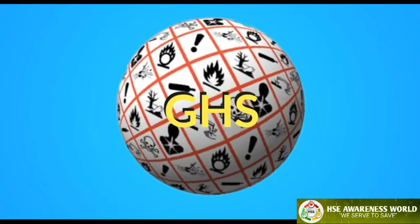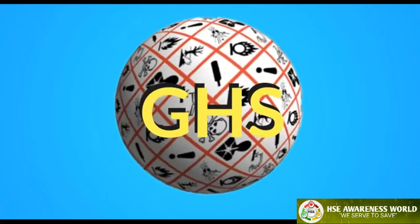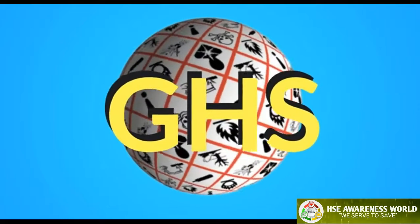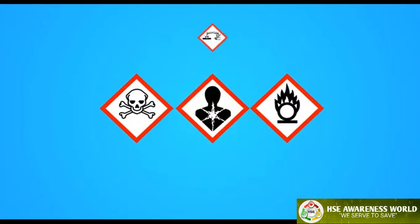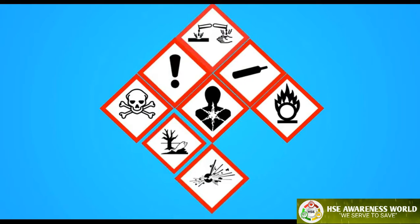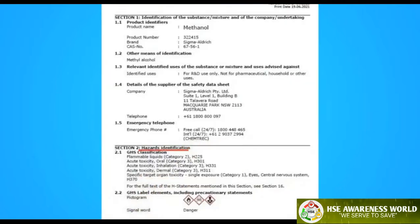The Globally Harmonized System, or GHS, makes identifying hazardous materials a relatively simple process. Using nine standardized symbols on all labels and documents, GHS provides a worldwide approach to classifying chemicals. The GHS symbol that should be used is indicated in Section 2 of the manufacturer's SDS.